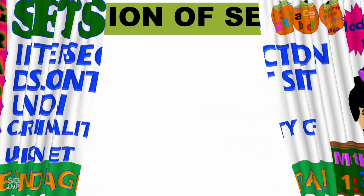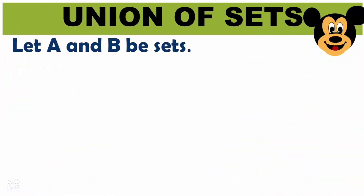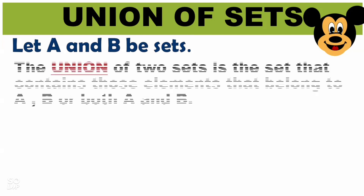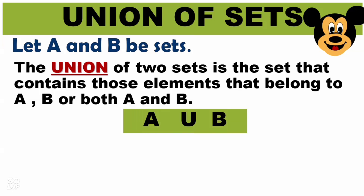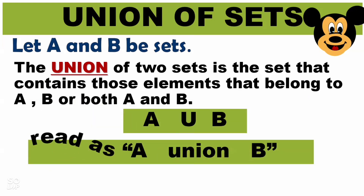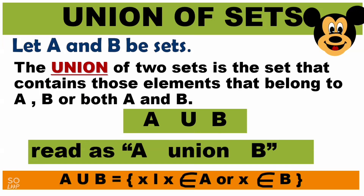Let's have first what we call the union of sets. Let A and B be sets. The union of two sets is the set that contains those elements that belong to A, B, or both A and B. We write this as A∪B, read as 'A union B.' In symbol: A∪B = {x such that x is an element of A or x is an element of B}.